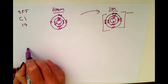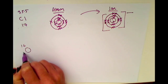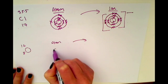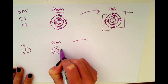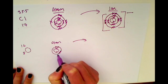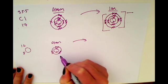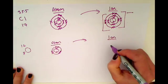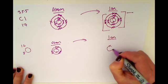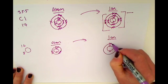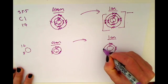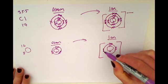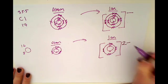Oxygen is another example. As an atom it has eight electrons - two on the inner shell and six in the outer shell. When it becomes an ion, you can see it's easier for it to gain two electrons than to lose six. So when it becomes an ion that's exactly what it does - it gains two electrons, becomes an ion, and because it gains two negative charges, its overall charge would be two minus.